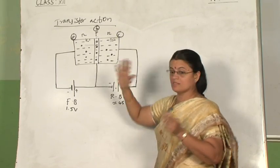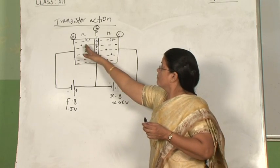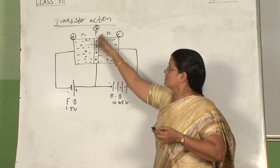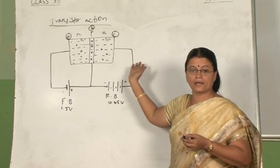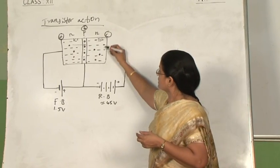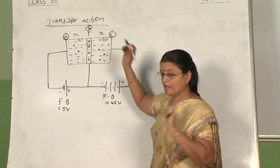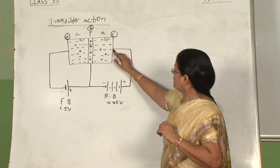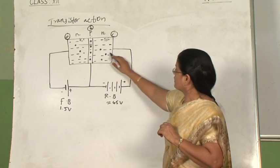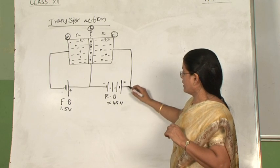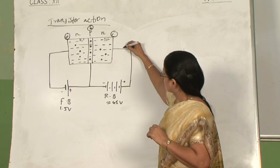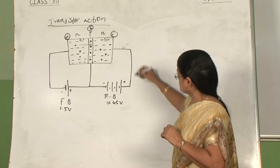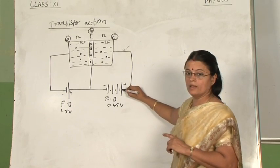This is how you understand why the base is thin and lightly doped. Suppose if the base is thick and heavily doped, then most of the electrons coming from the emitter section will recombine there only and nothing will reach the collector section. So in the collector section, 95 electrons have come out. The electrons can come out of the crystal lattice through the connecting wire and flow towards the positive terminal.